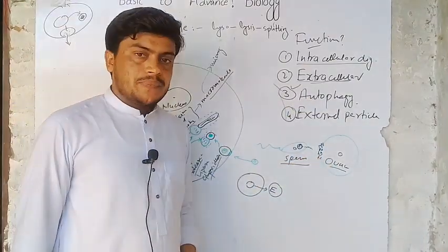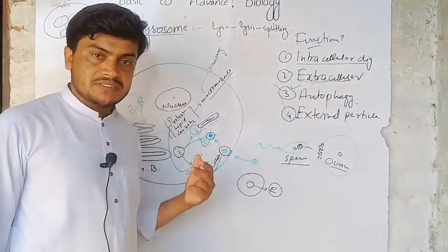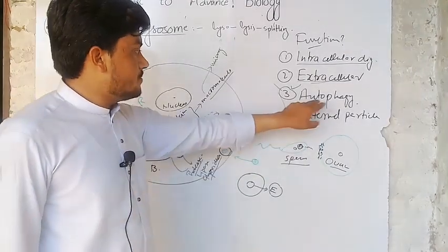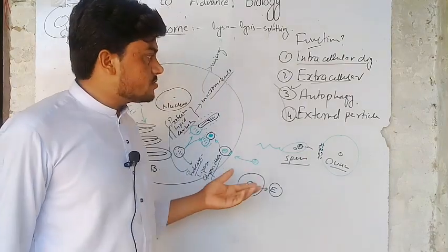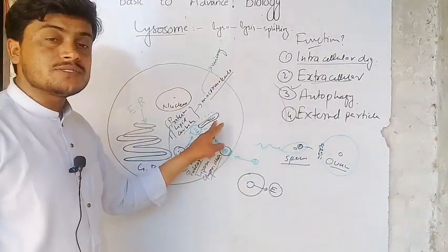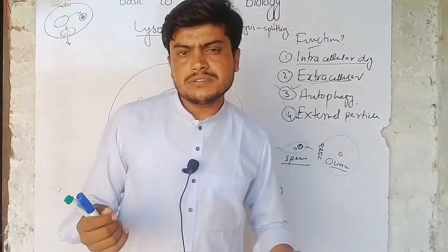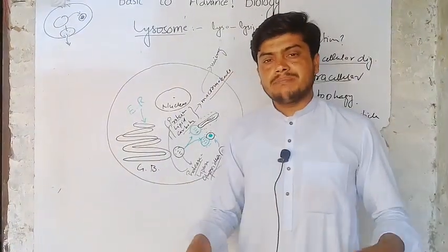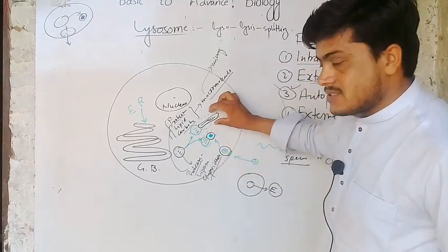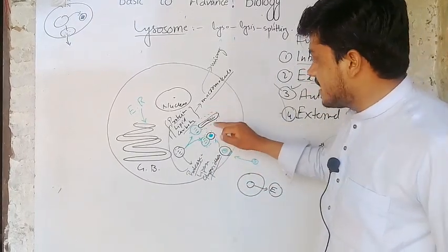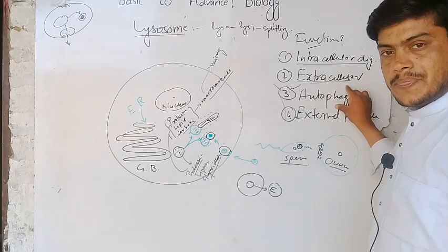Third one is autophagy. Autophagy is a process in which a non-functional organelle is dissolved inside the cell. For example, this is a mitochondria which is no longer functional or malfunctional — it cannot carry out any type of activity. So it is a burden on the cell, and the lysosome will fuse with this organelle, engulfing it and dissolving it completely. This is known as autophagy.